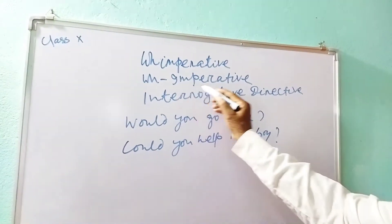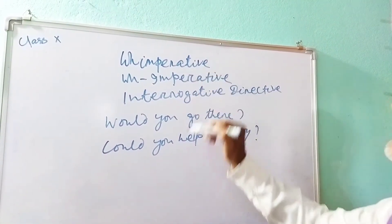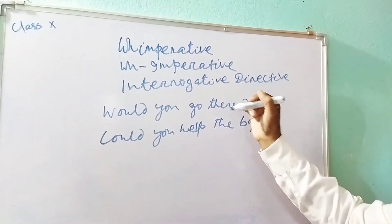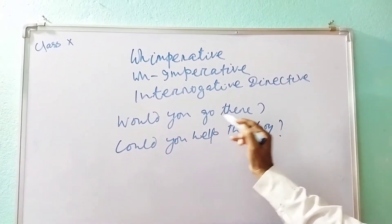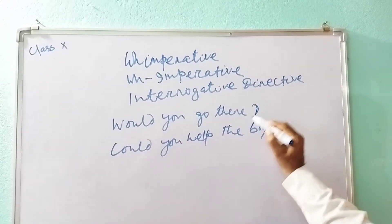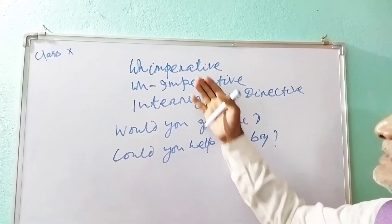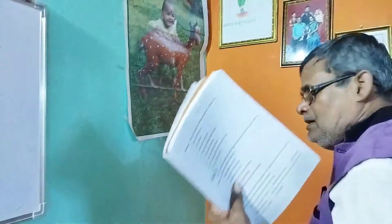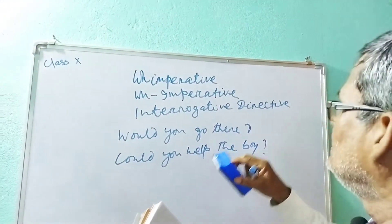Now I will teach a very interesting grammar item called HIP imperative, also known as WH imperative or interrogative directive — three names. This was created by the linguist Jiram Shadak. For example, instead of saying 'Go there,' you say 'Would you go there?' or 'Could you help the boy?' — the question mark is there. This is called HIP imperative. Just write it down for your own academic knowledge.